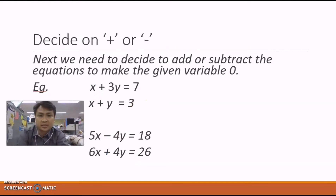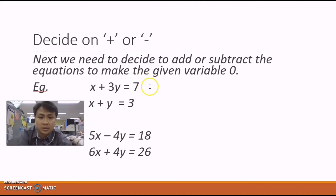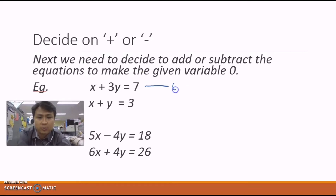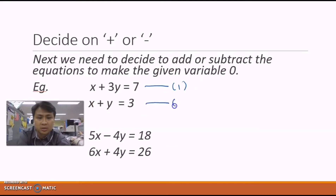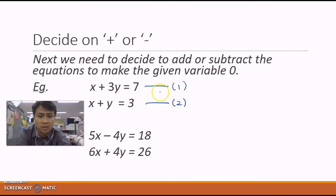Once we've decided which variable to remove, we label the equations. The first equation gets a long dash followed by a bracket and 1 — representing equation 1. The second equation is labeled similarly as equation 2. Make sure the dash is long enough so it doesn't look like a minus sign, and always include the brackets.